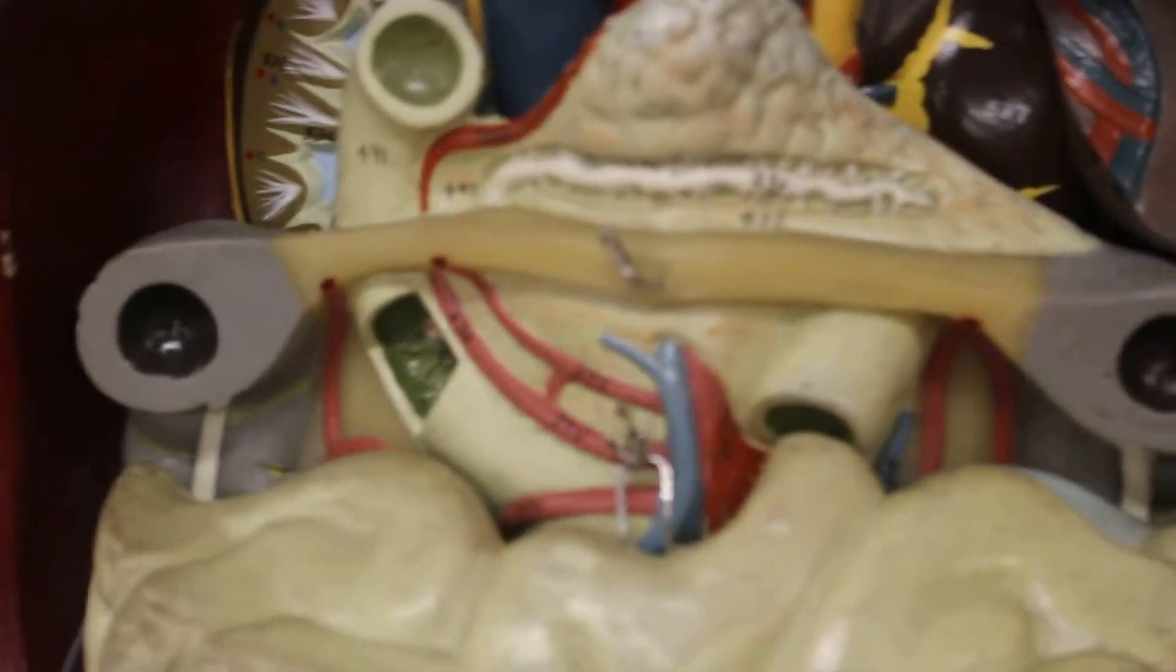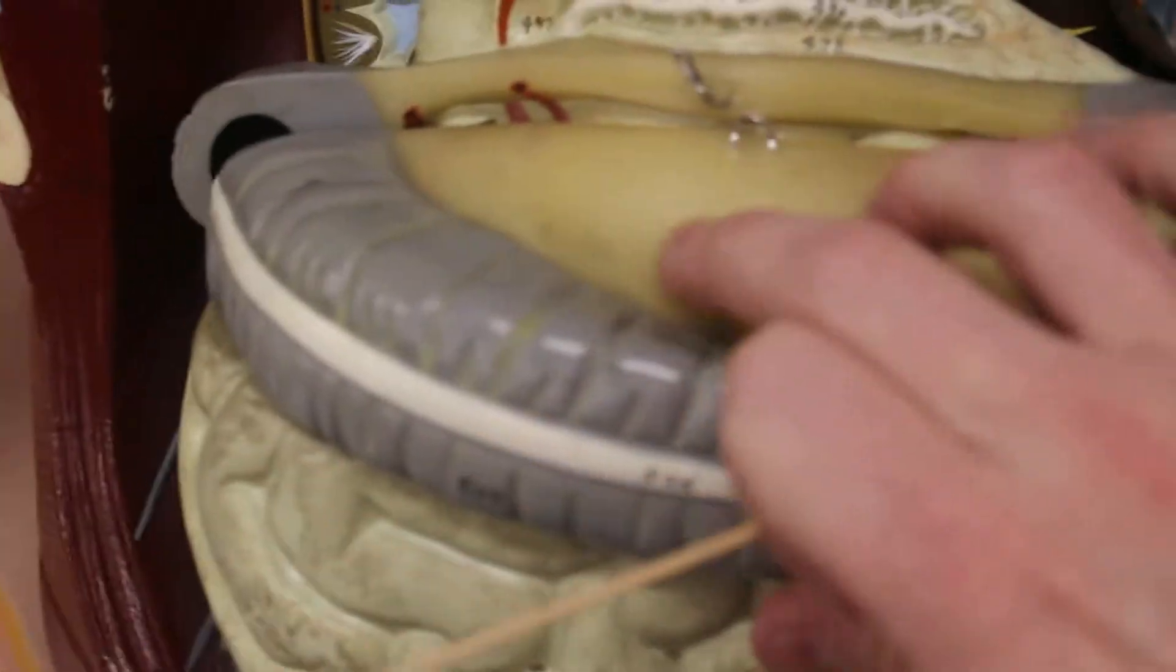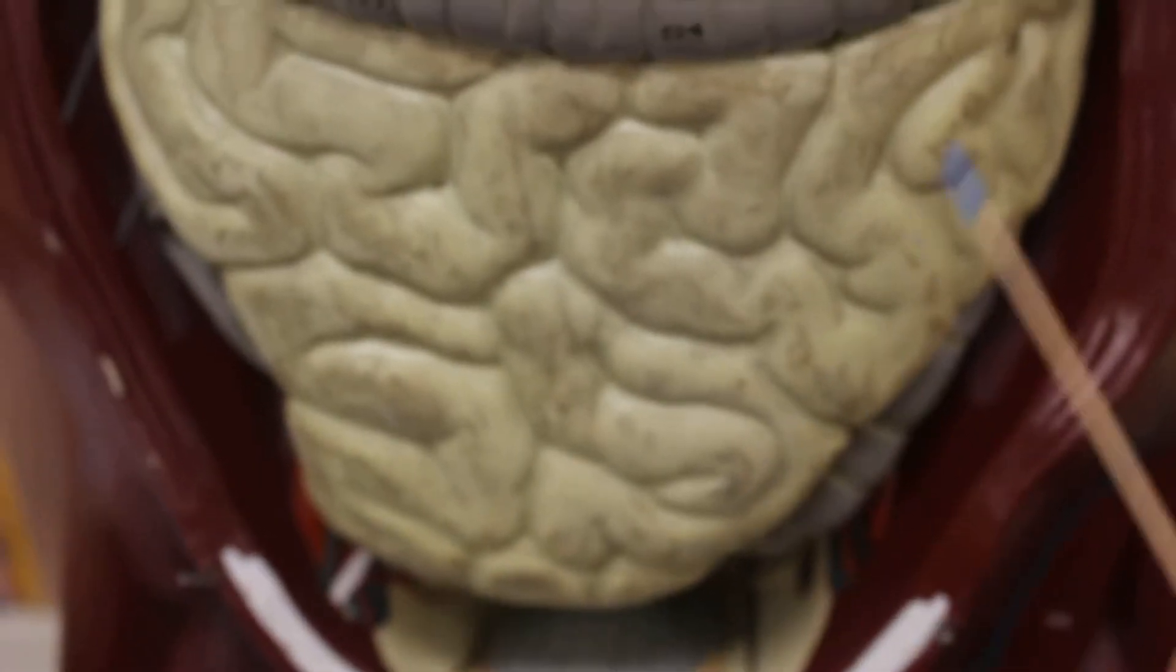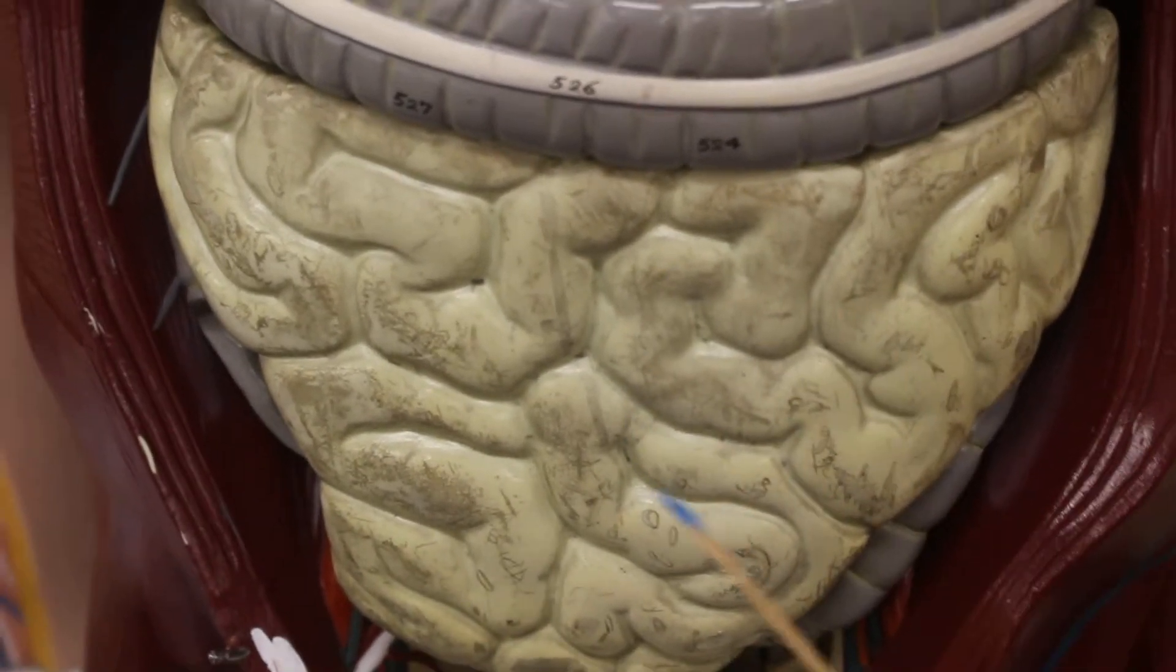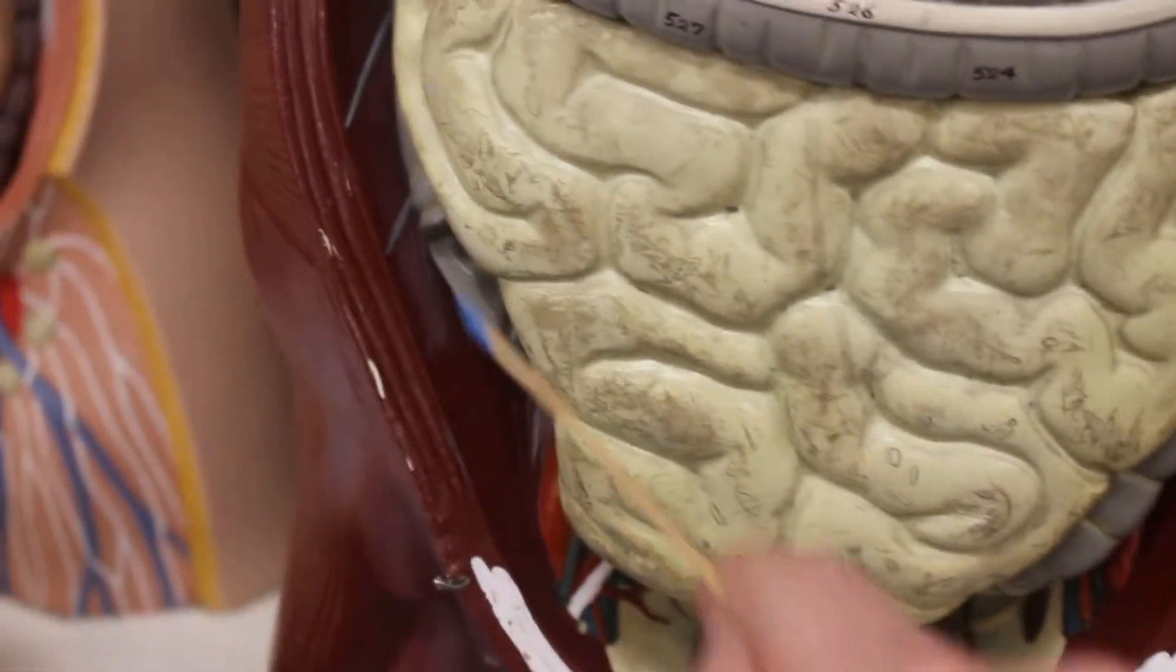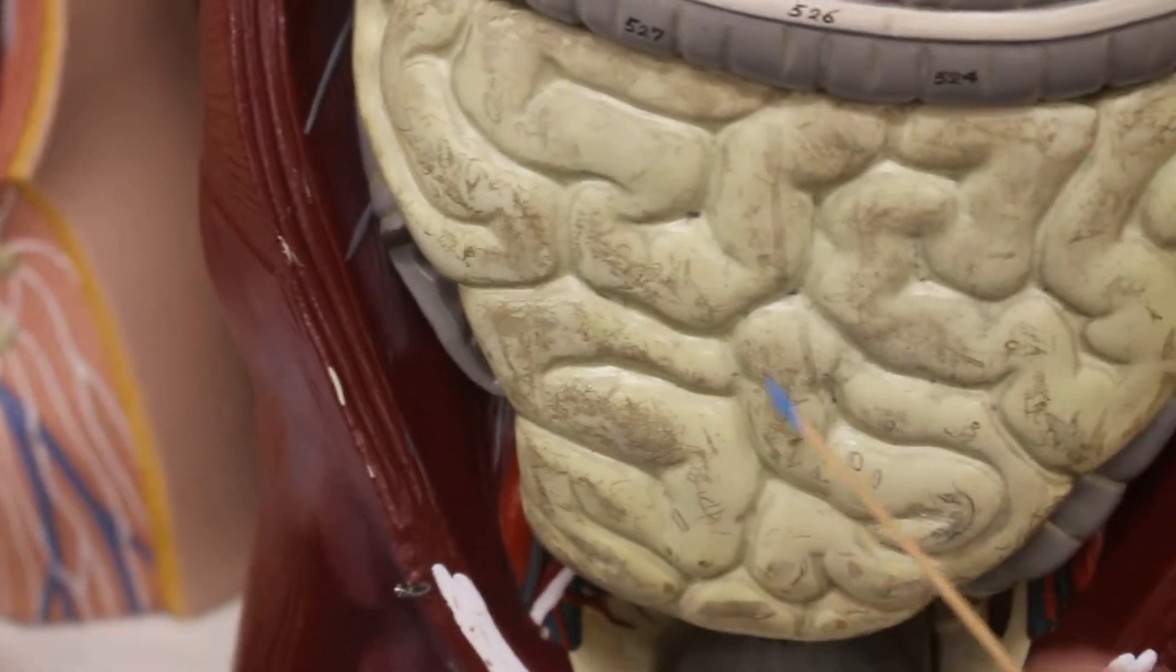Now the duodenum of the small intestine leads to this region of the small intestine called the jejunum. And then the jejunum leads to this region of the small intestine called the ileum.